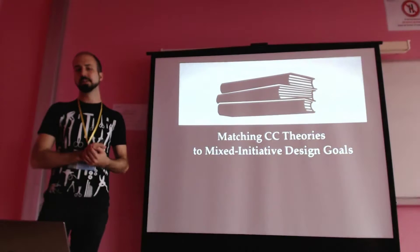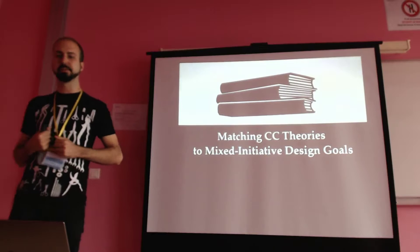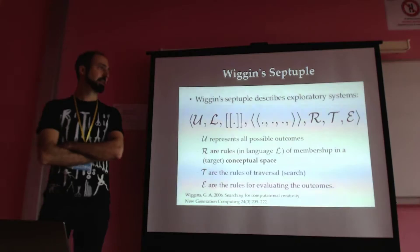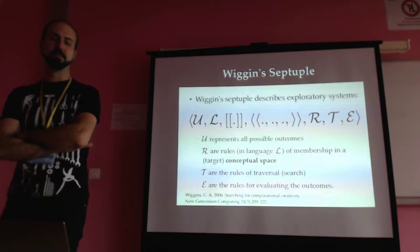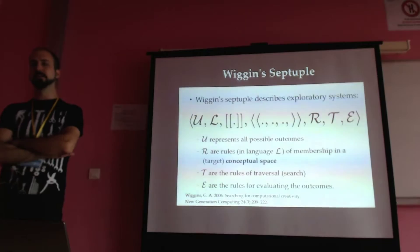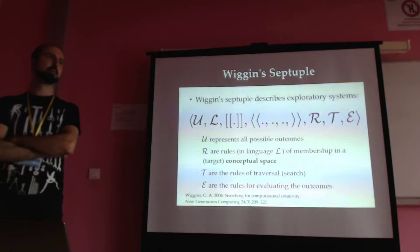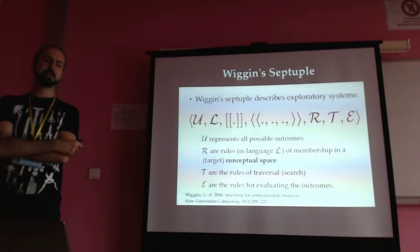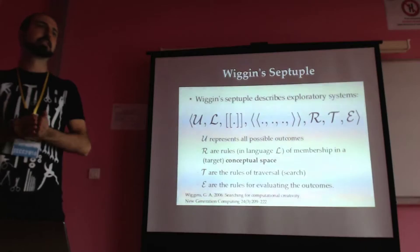Let's talk about computational creativity theory. I'll focus on three prevalent theories and adapt them for mixed-initiative design tools. First is the Garin-Wiggins model, which describes exploratory systems. Here U is the universe of all possible outcomes, R are the rules defining membership of the conceptual space — what constitutes a valid artifact of this genre, like a valid jazz melody or a valid chess move. T are the rules of traversal, how you explore this space. And E are the rules for evaluating outcomes — is this a good chess move, is it a good jazz melody?